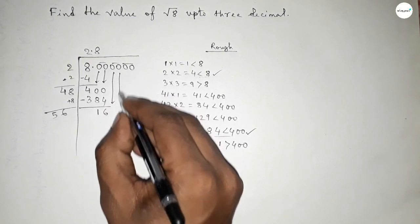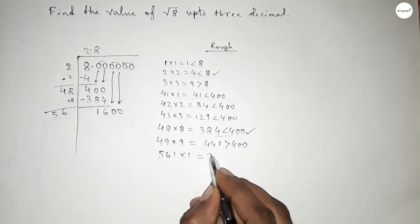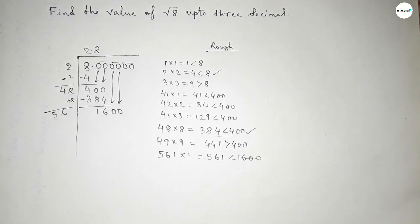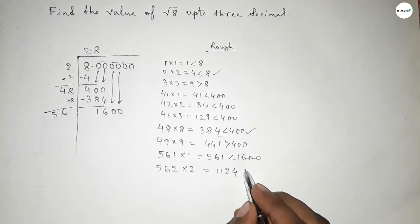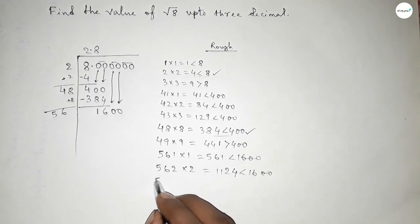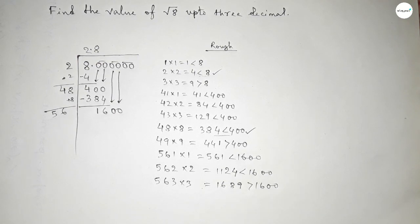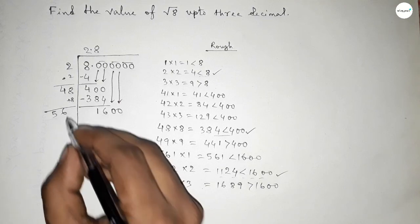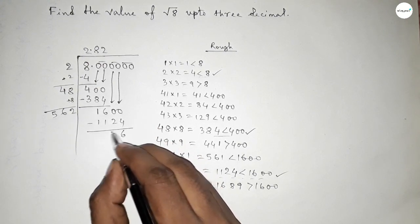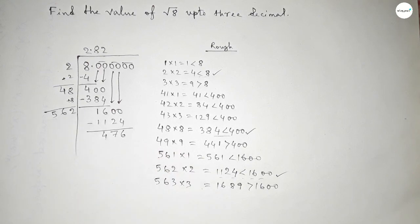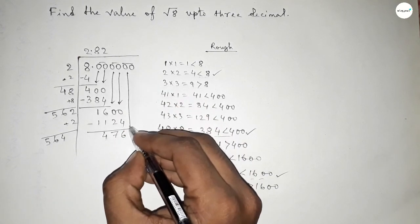Now adding the last digit 8 to the divisor: the last digit is 8, so adding 8. Bringing down the second pair of zeros, giving us 1600. What number should we put beside 56? If we put 1, 561×1=561, less than 1600. If we put 2, 562×2=1124, less than 1600. If we put 3, 563×3=1689, which is greater than 1600. So we take 2. Putting 2, and the product is 1124. Subtracting: 1600−1124=476.